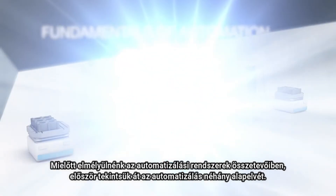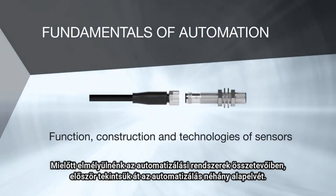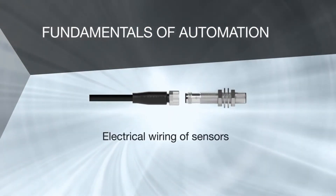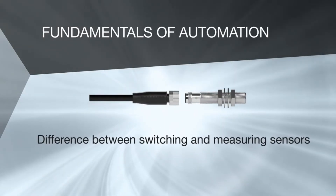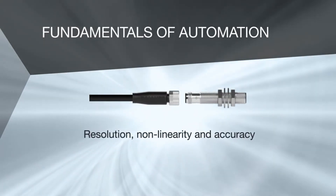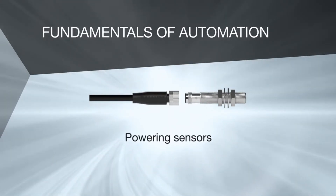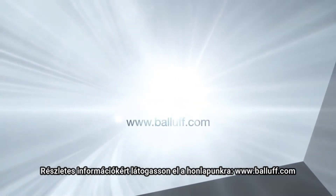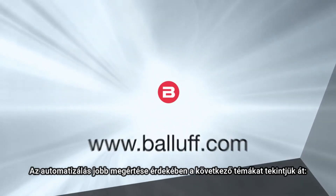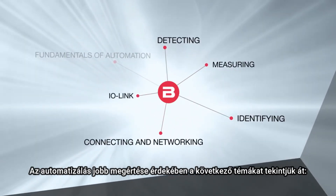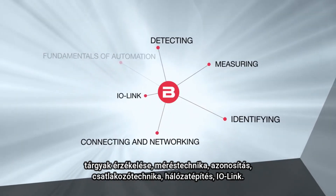Before we get further into these exciting components of automation systems, let's first review some basic principles of automation. For detailed information, visit our website at www.balluf.com. In order to better understand automation, we will cover the following topics: Detecting, Measuring, Identifying, and Connecting and networking.